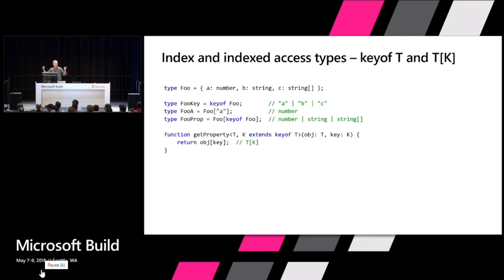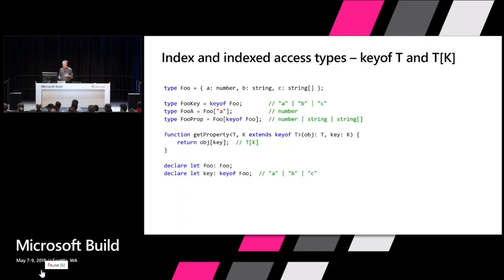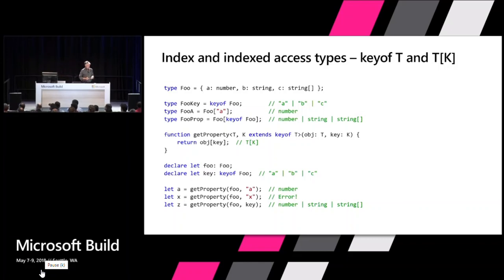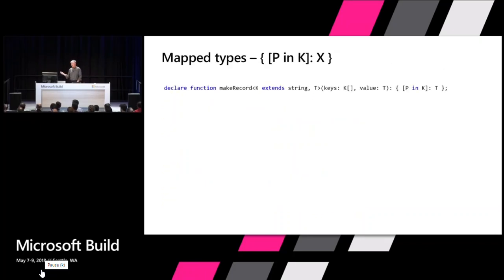You need to be able to reason about that at a higher level. So you can write a getProperty function that takes some object T and some key K that is whatever the permissible property names of T are, and returns T[K]. We don't know what T and K are yet, but once inferred we can type check accordingly. For example, if I declare a variable of type Foo and say getProperty(foo, 'a'), we can infer the return type number for 'a', give an error for an invalid property name 'x', or return number or string or string array for a key of type 'a' | 'b' | 'c'.